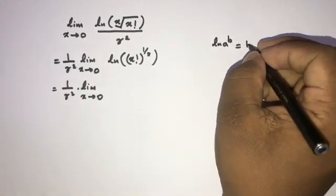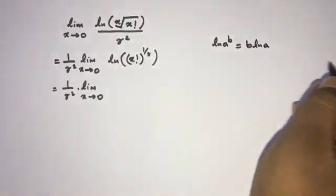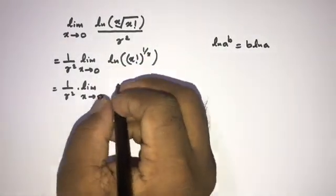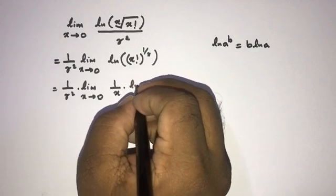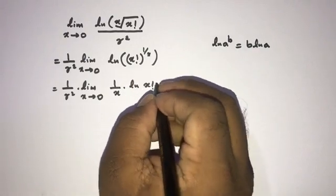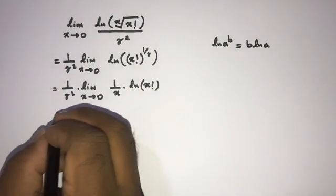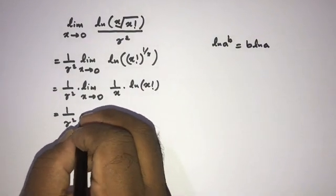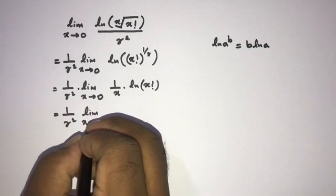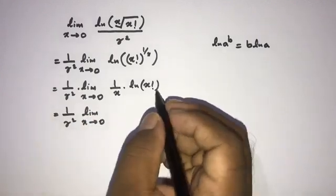So we can write here 1 over x times natural log of x factorial. Then here I rewrite: 1 over gamma squared, limit x approaches to 0.